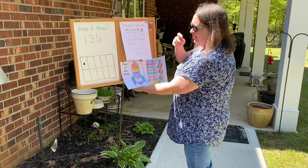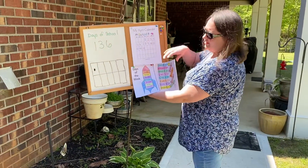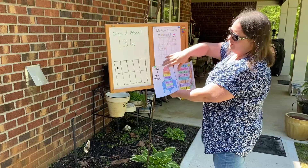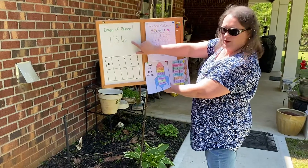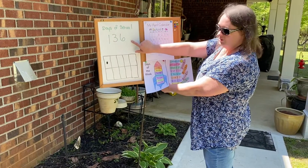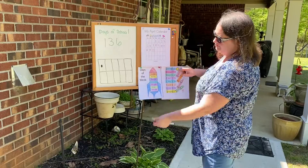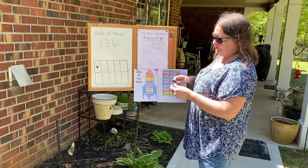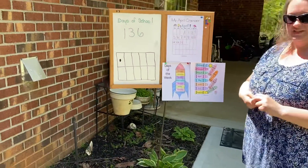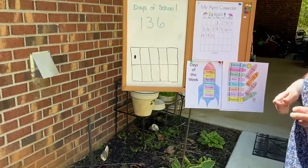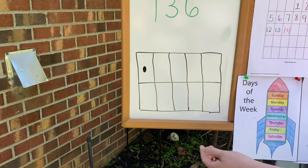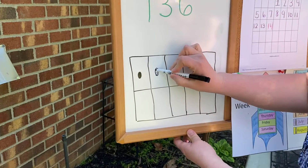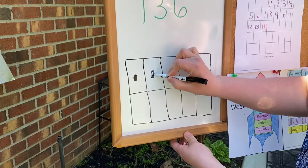When we left, we had 135 days. Now we added one day, and it became 136 days. We also had one dot on our dot chart, so we're going to add one more, and if we add one more, that makes two dots.